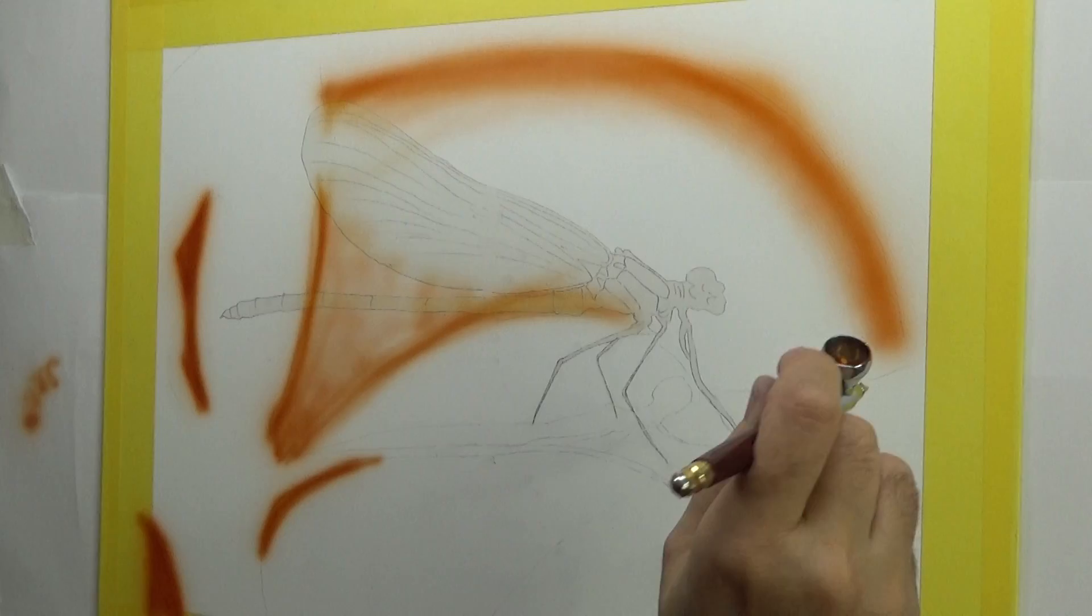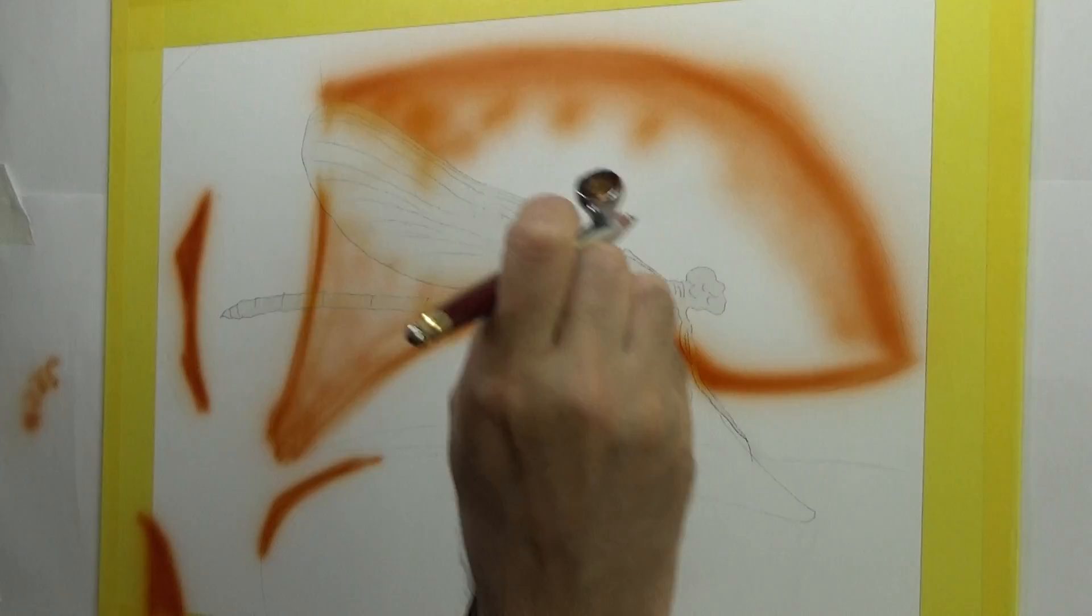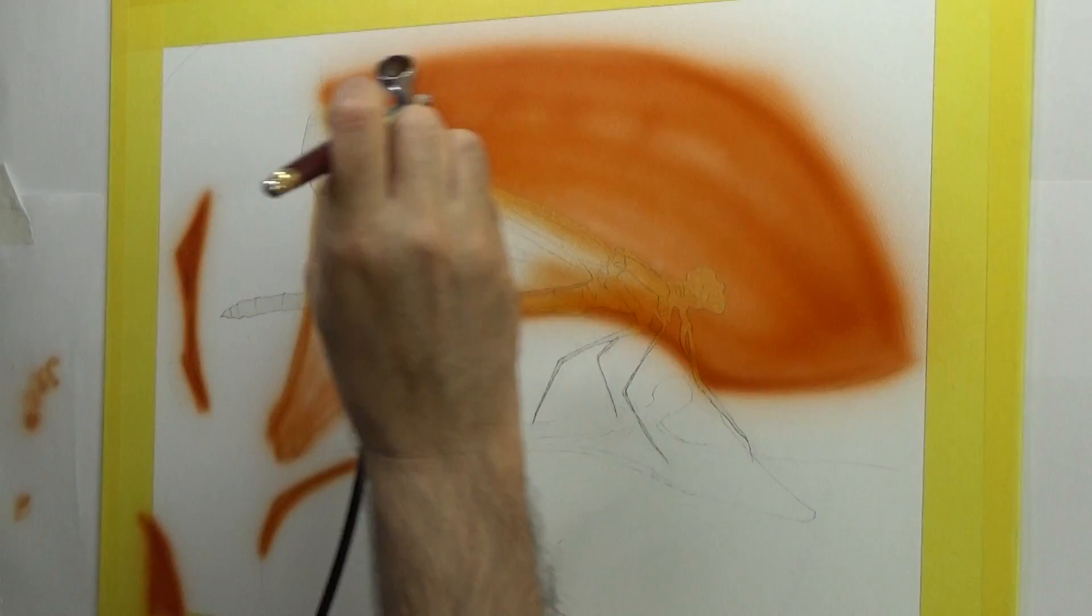Now, all the foliage is out of focus. This being a macro subject, so the depth of field is tiny. Even the damselfly has got depth of field from front to back, which I'm not going to replicate.